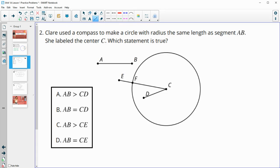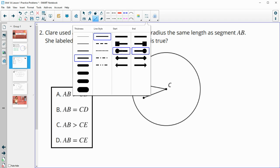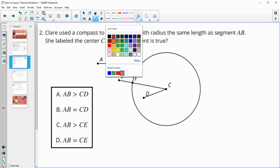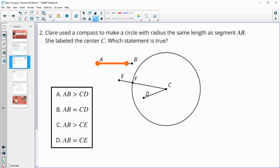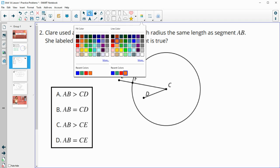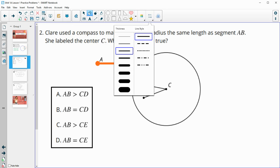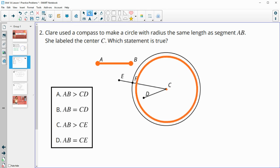So Claire used a compass and a straightedge to make a circle with a radius that is the same length as AB. Let's highlight AB on here. Here's segment AB. This circle has the same radius as AB. So any radius of this circle is going to be the same length as AB.